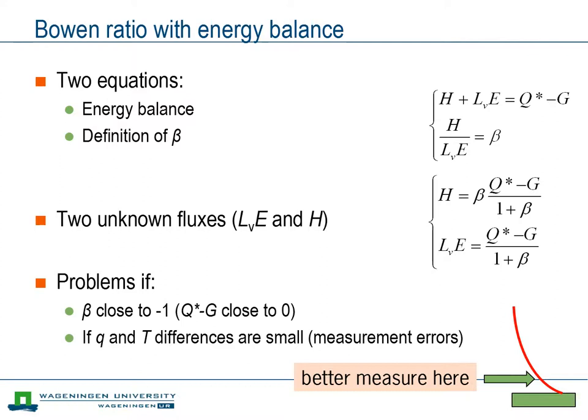A second potential problem is that the vertical differences in temperature or humidity become so small that they cannot be determined well. The observations at each level have a finite accuracy, say 1 tenth of a degree. And this implies that the vertical difference has an accuracy of 2 tenths of a degree. If that is also the order of magnitude of the vertical difference itself, the error is 100%. Therefore, it is best to measure close to the surface, where vertical differences are largest.